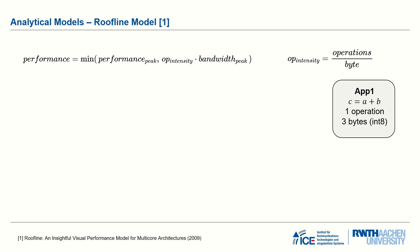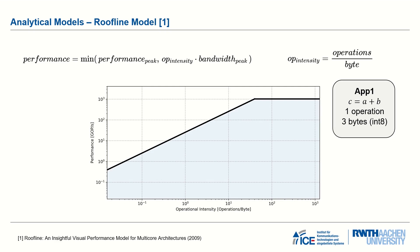The roofline graph shows the slope determined by memory speed and the roof determined by maximum compute power. By looking at the operational intensity of your application, you can directly see the bottleneck and the attainable performance. For application one, we can achieve a performance of 8 GB operations per second, with memory being the bottleneck. This model can of course be applied to artificial neural networks and DLAs.